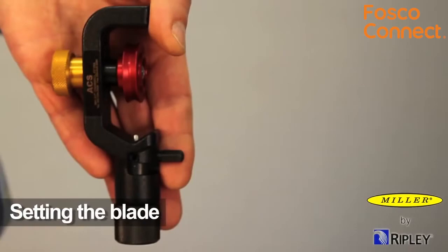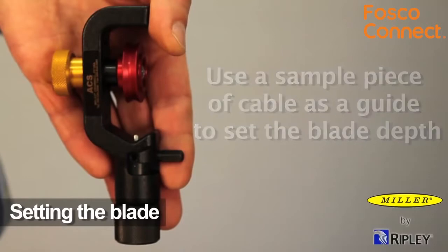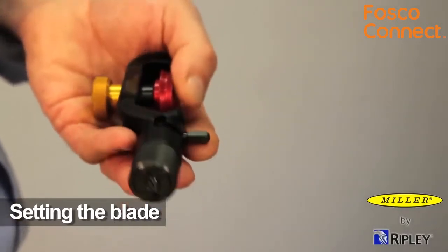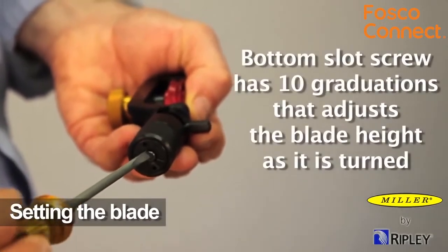Once the cable construction is determined, set the blade. The ACS2 will be shipped with the slitting blade retracted. The cutting blade depth setting can be made with a sample piece of cable as a guide. The bottom thumb knob has a slotted set screw that has 10 graduations and adjusts the blade height as it is turned.